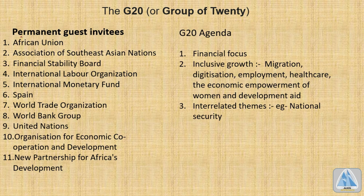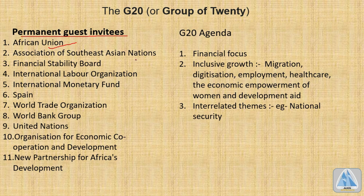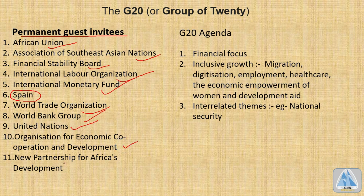G20 conferences are not only attended by member countries and the European Union; there are also permanent guest invitees including the African Union, ASEAN, the Financial Stability Board, International Labour Organization, International Monetary Fund, Spain, WTO, World Bank, United Nations, Organization for Economic Cooperation and Development, and the New Partnership for Africa's Development. These invitees are allowed to contribute to discussions.